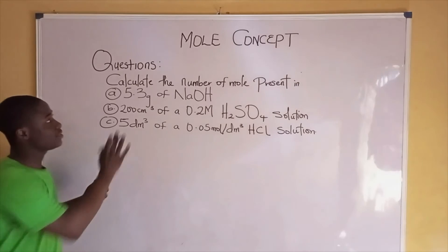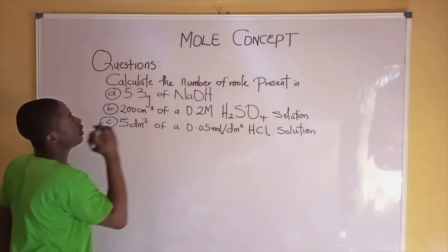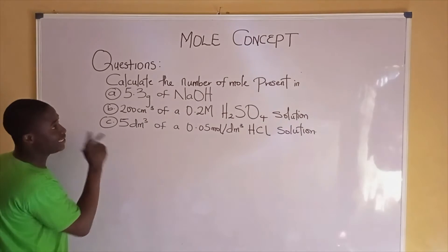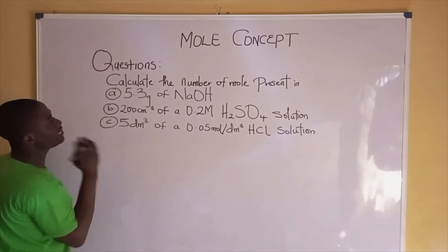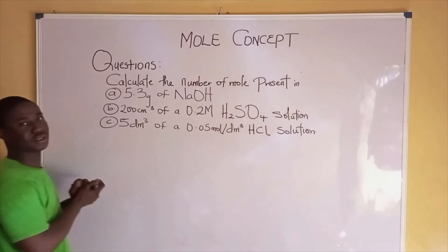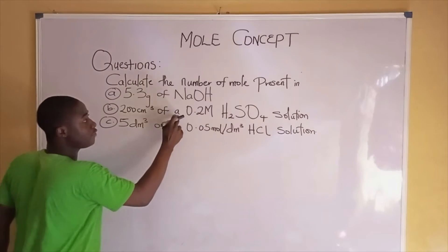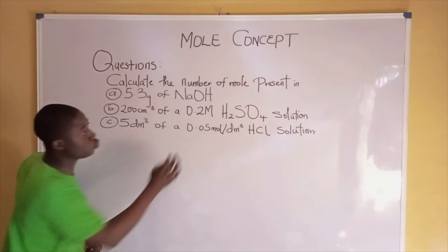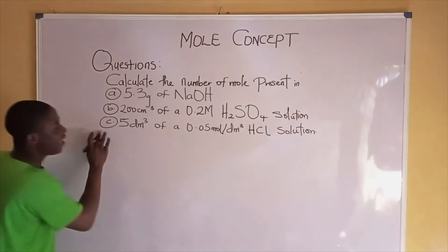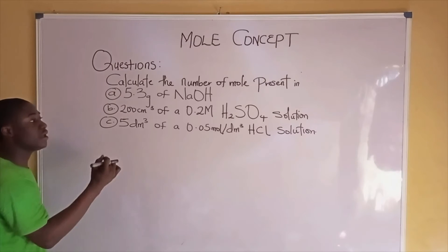Let's move to question 2. Calculate the numbers of moles present in: A — 5.3 grams of sodium hydroxide; B — 200 cm³ of a 0.2 molar H₂SO₄ solution; and C — 5 dm³ of a 0.05 moles per dm³ H₂SO₄ solution.